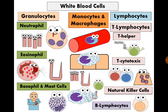Lastly, B-lymphocytes. The main function of B-lymphocytes is to produce antibodies in blood and tissue fluids, making them responsible for humoral immunity — mainly against extracellular organisms. And those are the white blood cells of the immune system.